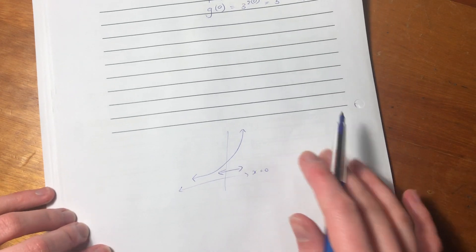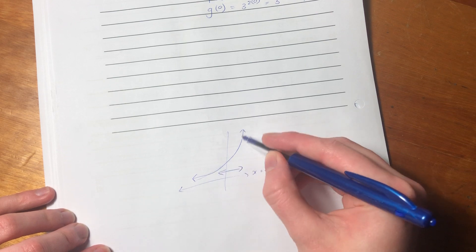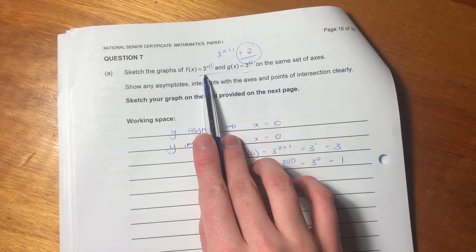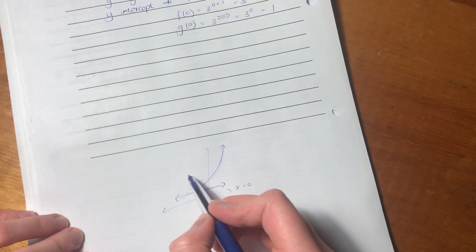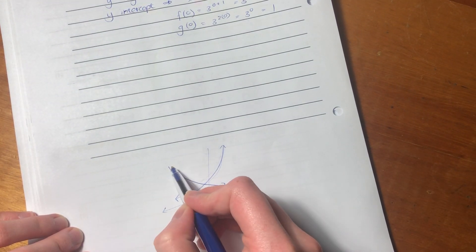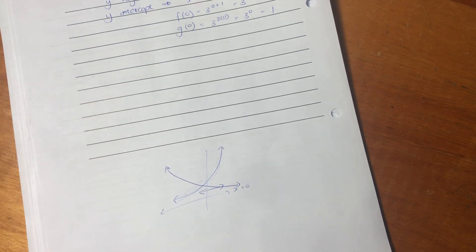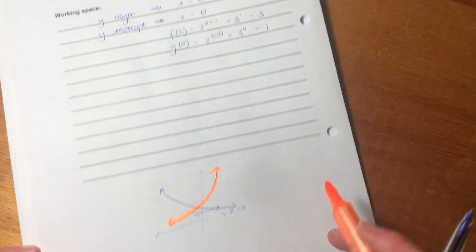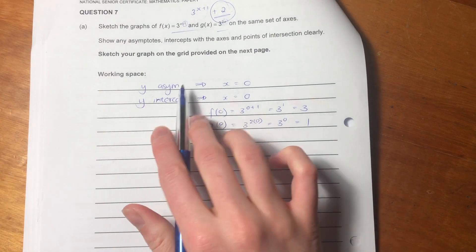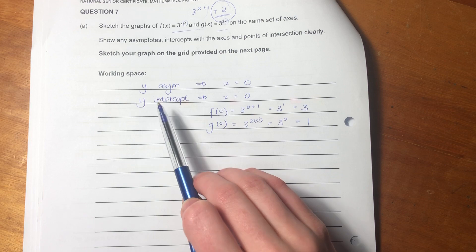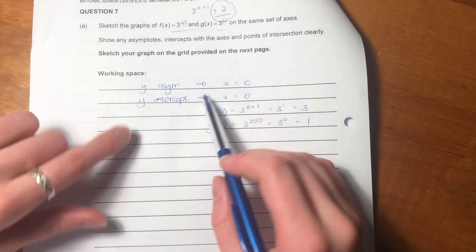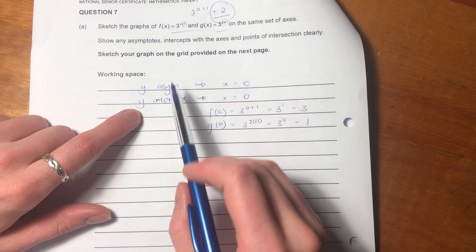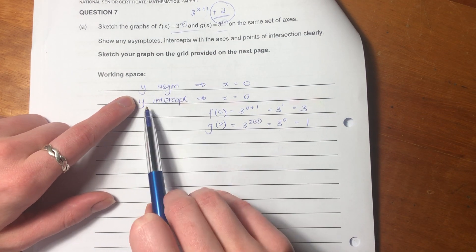So now we have that. Again, as I said, both of these graphs have this shape here. If it is a fraction, so if these base threes were less than one, then you would have an exponential graph going that way. But because it's greater than one, we know that both of these graphs are going to go this way. So we've worked out our asymptotes for both the graphs. We've worked out our y-intercept. There's no x-intercept here. Oh, there's like bugs everywhere here.